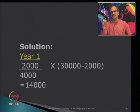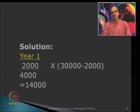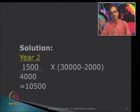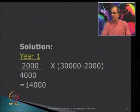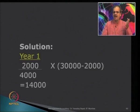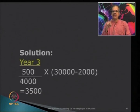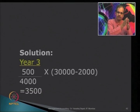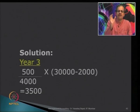Depreciation is 14,000 in year 1 — the rate is 7 rupees per unit times 2,000 units — or calculated as 2,000 upon 4,000 into 28,000. In year 2, usage is 1,500 units, so the depreciation charge becomes 10,500. In year 3, with only 500 units produced, depreciation is 500 upon 4,000 into 28,000, which is 3,500. Both the machine hour method and the production unit method are fairly similar — both intend to charge depreciation based on actual use of the asset.